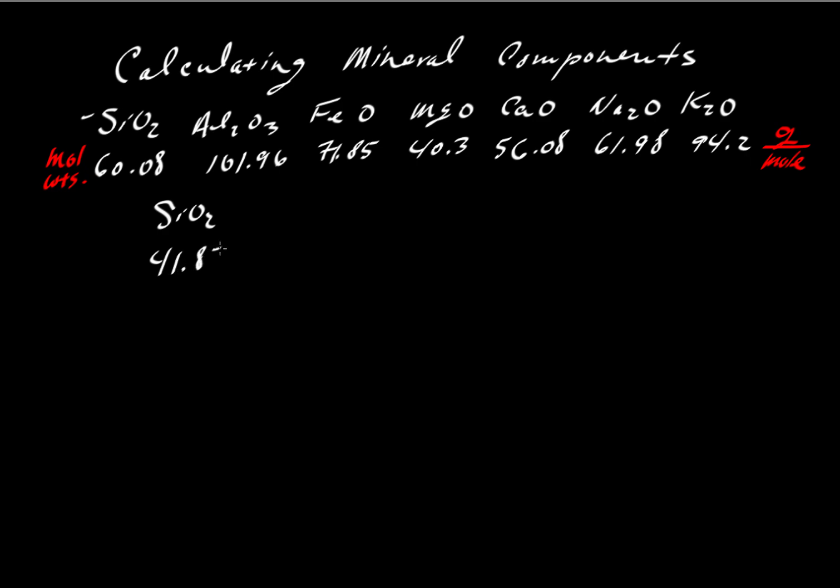Let's say an olivine is analyzed, we might have an analysis that looks like this: 41.85 weight percent silica. We might have an FeO content of 2.05 and then an MgO content of 56.17. We're going to keep it simple just by looking at these three oxides.